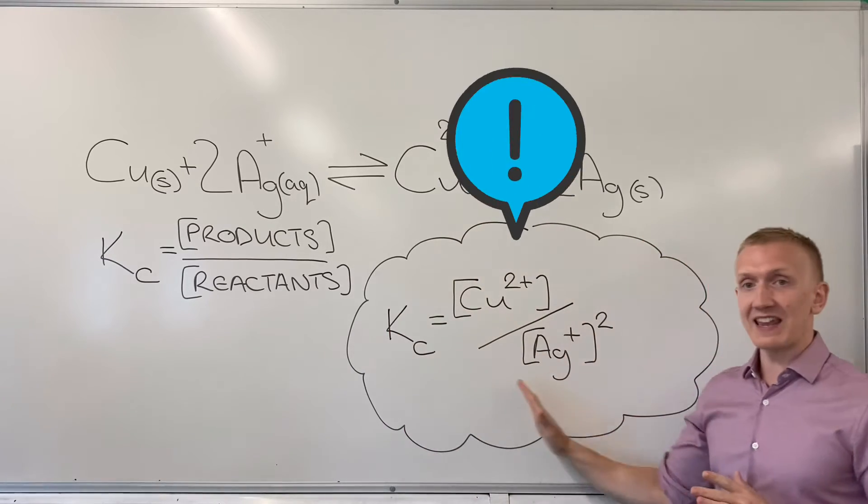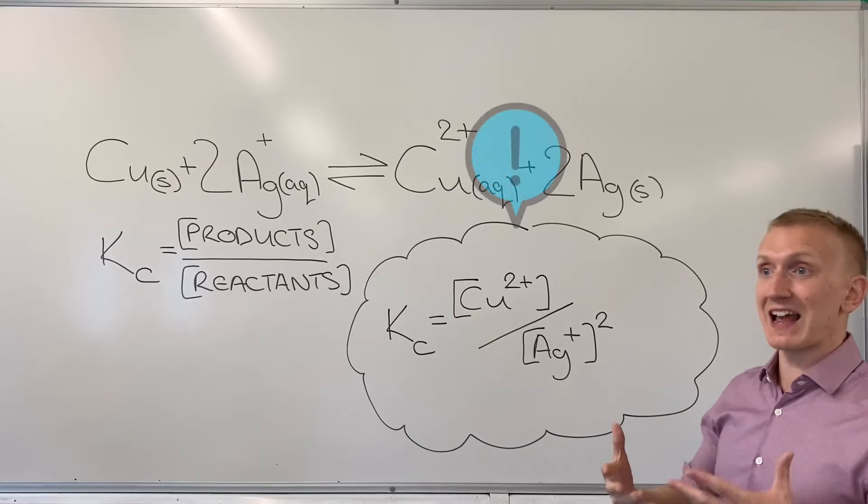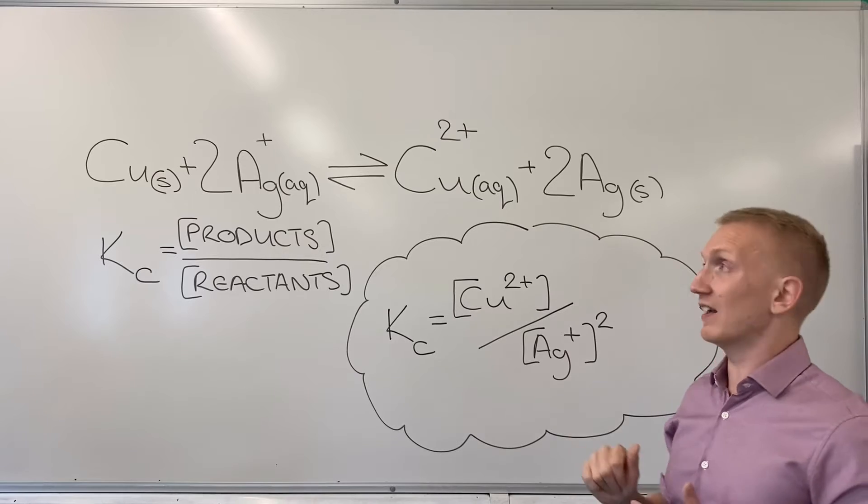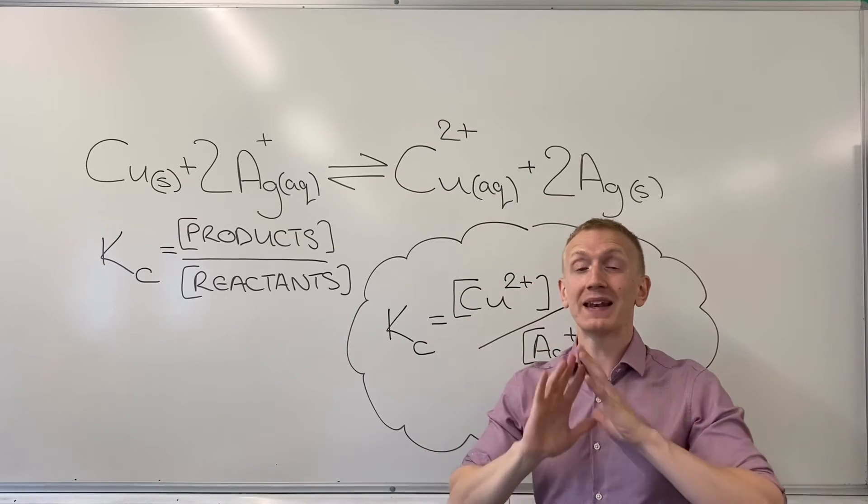As a result, when we look at the KC expression here, you can see that we've got quite a lot of activity has now been left out. We've had to leave out the copper solid and we've had to leave out the silver solid. Even though there was a two coefficient in front of this, it's gone. It's been left out completely.